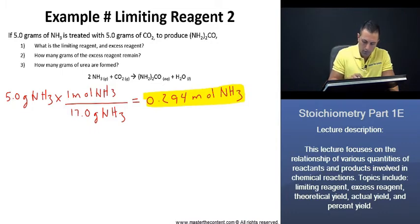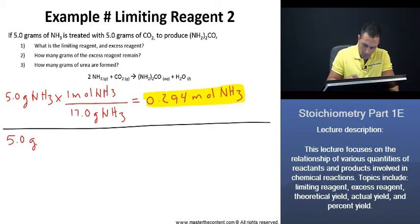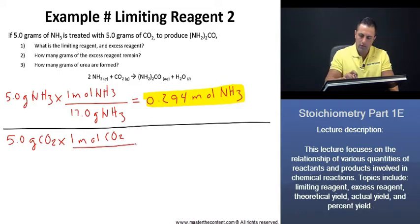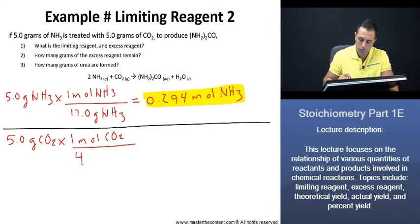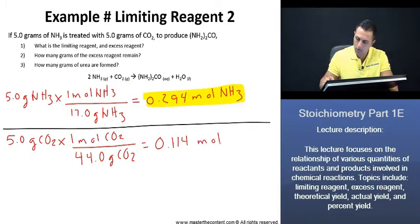Next, we'll find the amount of moles of our carbon dioxide. We initially have 5 grams as well. Thus, if we take 5 grams of our carbon dioxide, we know that the molar mass of carbon dioxide is going to be 16 plus 16 plus 12 from the carbon, giving us 44 grams per mole. Once we equate this, we get 0.114 moles of our carbon dioxide.